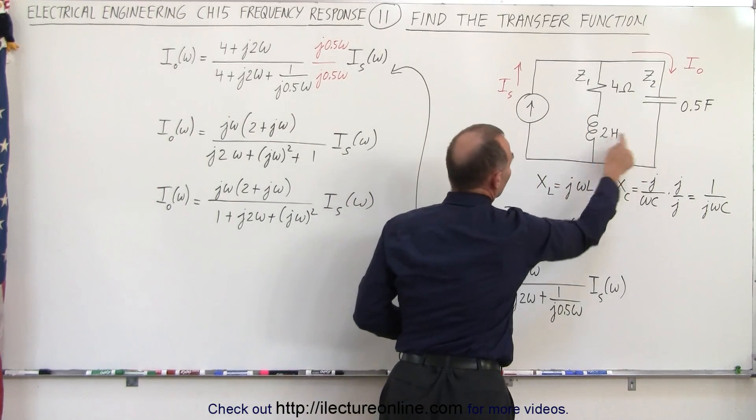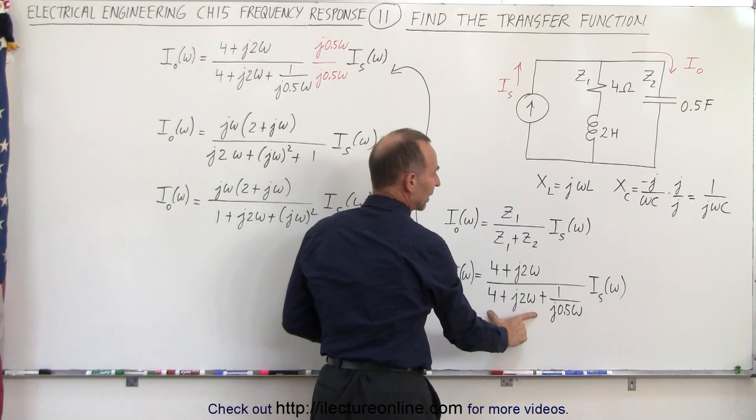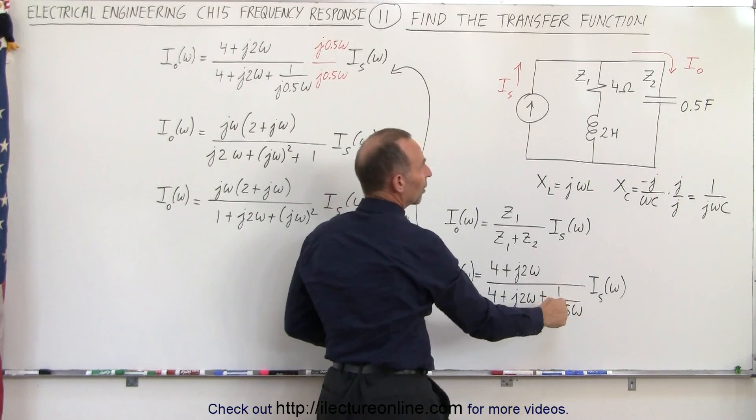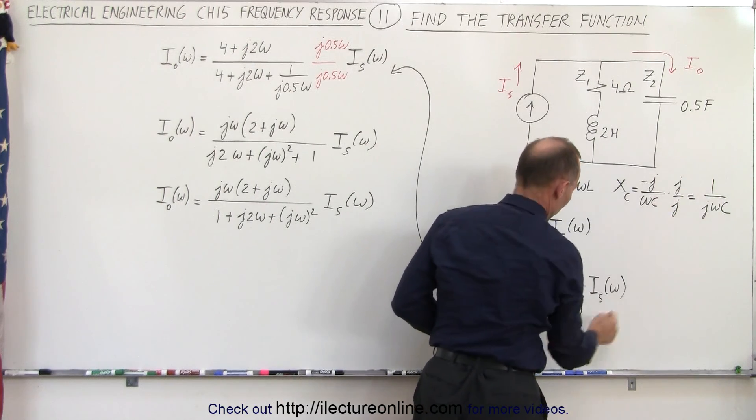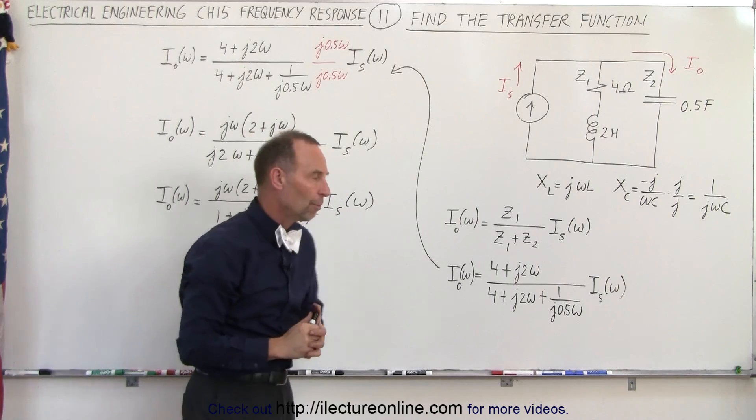Then we add the two impedances together, so that will be 4 plus J2 omega plus the impedance across the capacitor, which will be 1 over J omega C. Since C is 0.5, we have J 0.5 times omega.